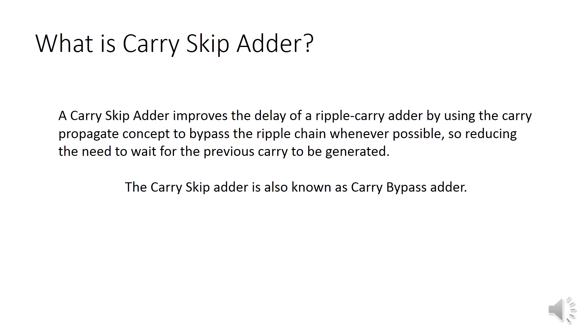What is a carry skip adder? A carry skip adder is another design that improves the delay of a ripple carry adder by using the carry propagate concept to bypass the ripple chain whenever possible, so reducing the need to wait for the previous carry to be generated. The carry skip adder is also known as a carry bypass adder.